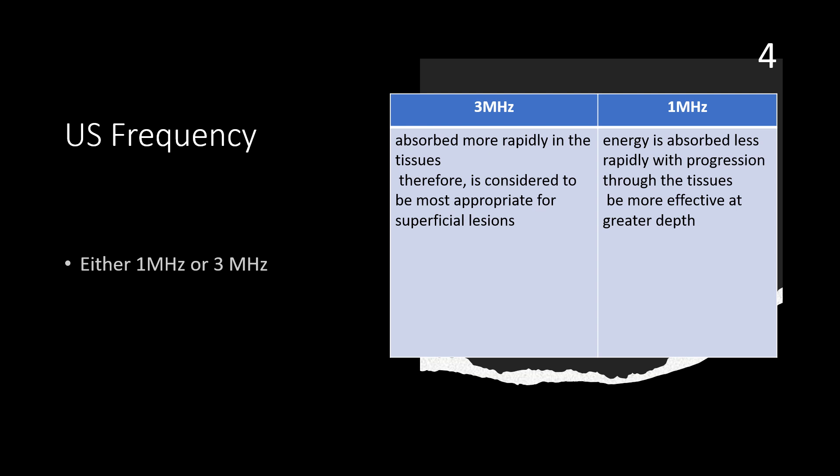The boundary between superficial and deep lesions is somewhat arbitrary, but somewhere around two centimeters depth is often taken as a useful boundary. Hence, if the target tissue is within two centimeters — or just under an inch — of the skin surface, three megahertz treatments will be most effective. Treatments to deeper tissues, more than two centimeters, will be effectively achieved with one megahertz.